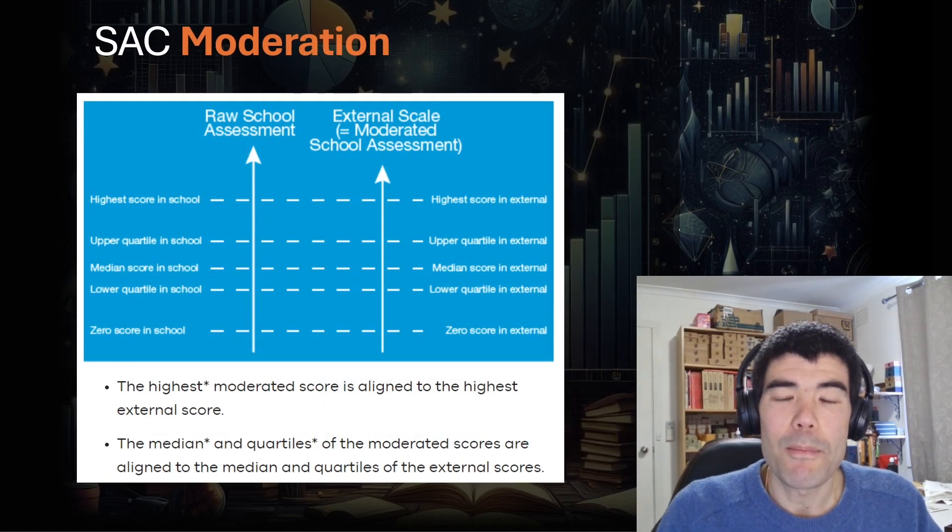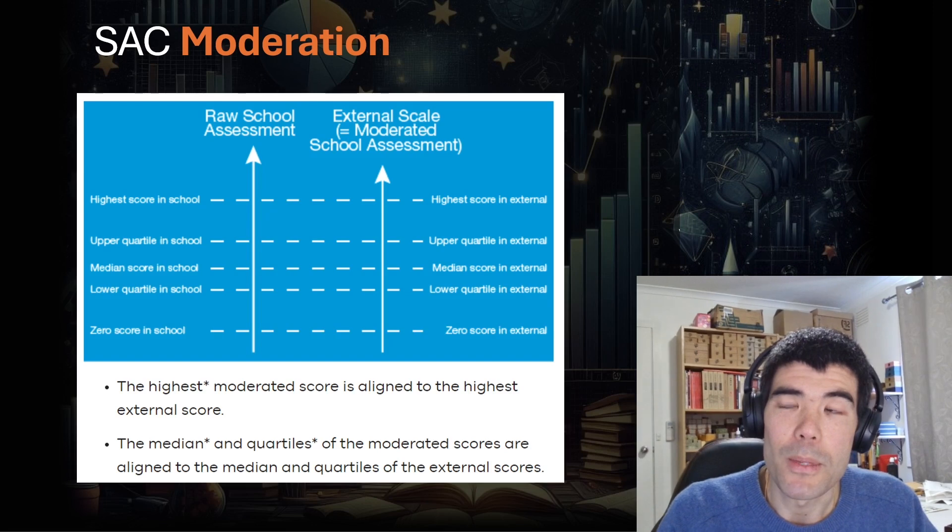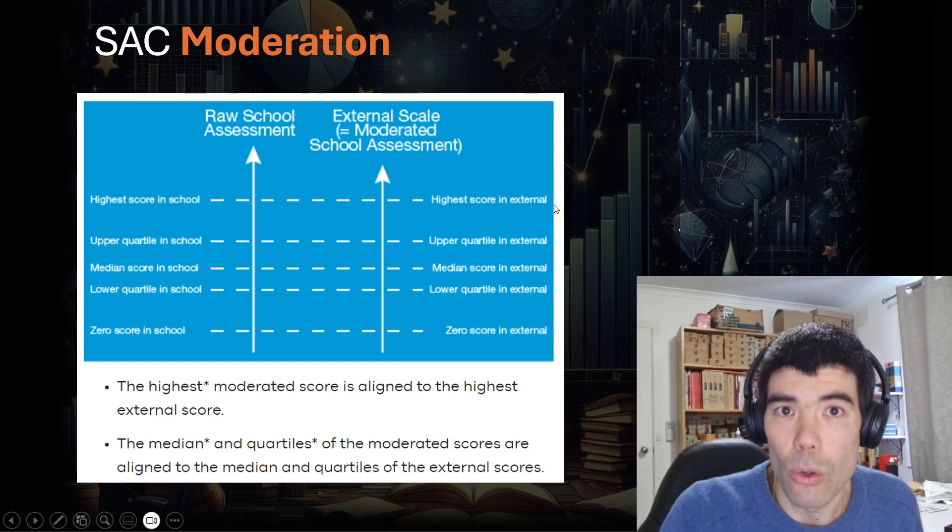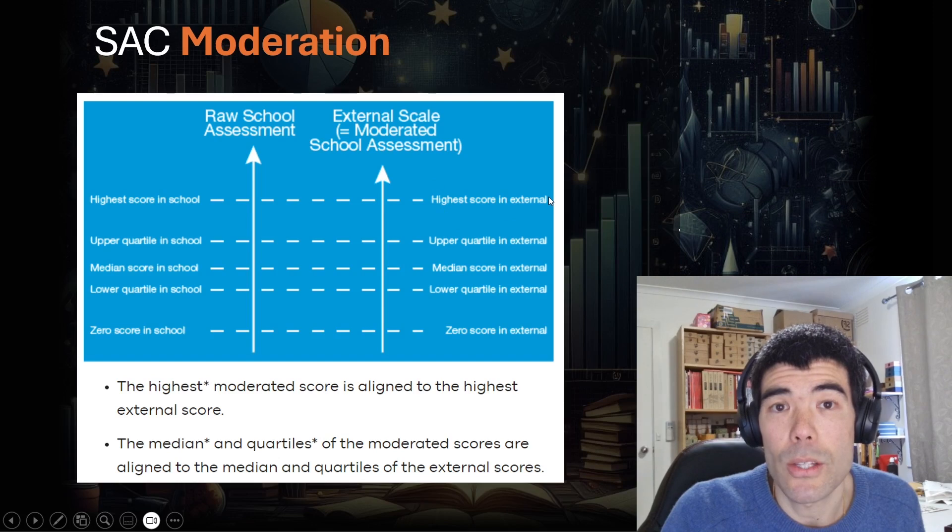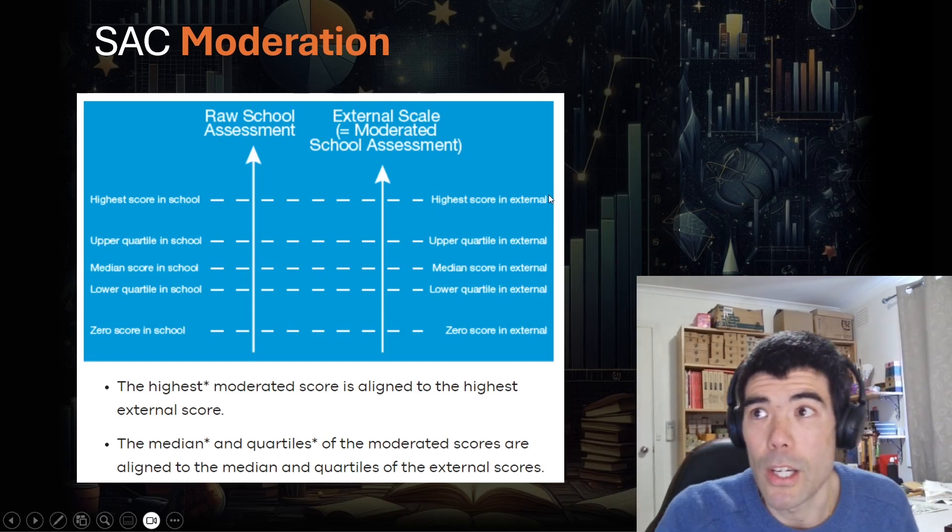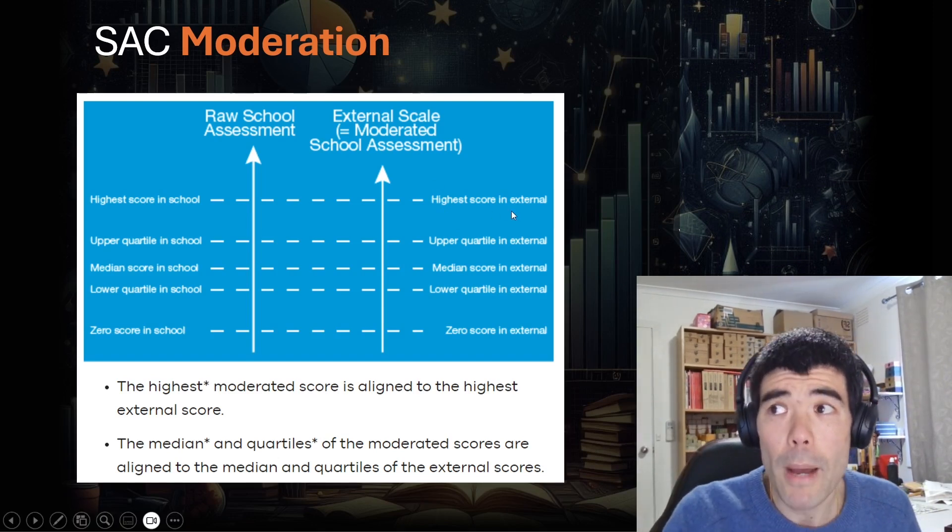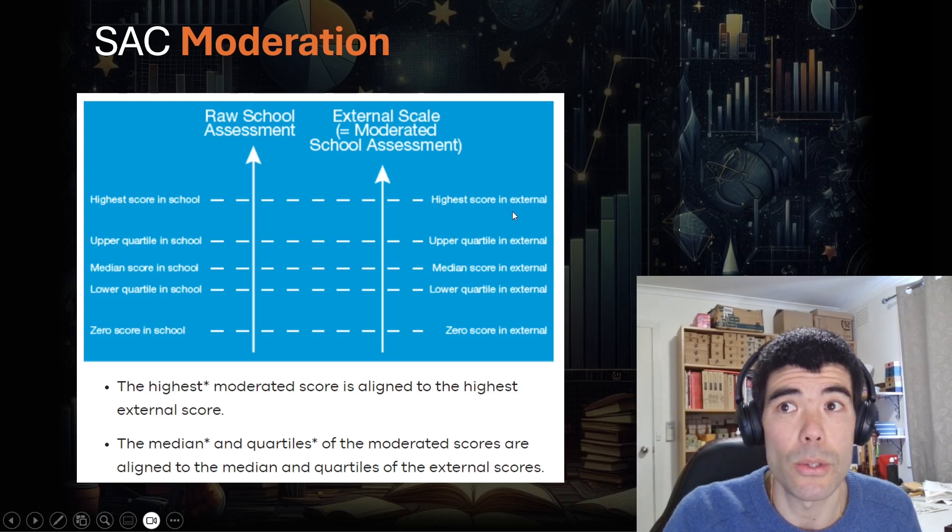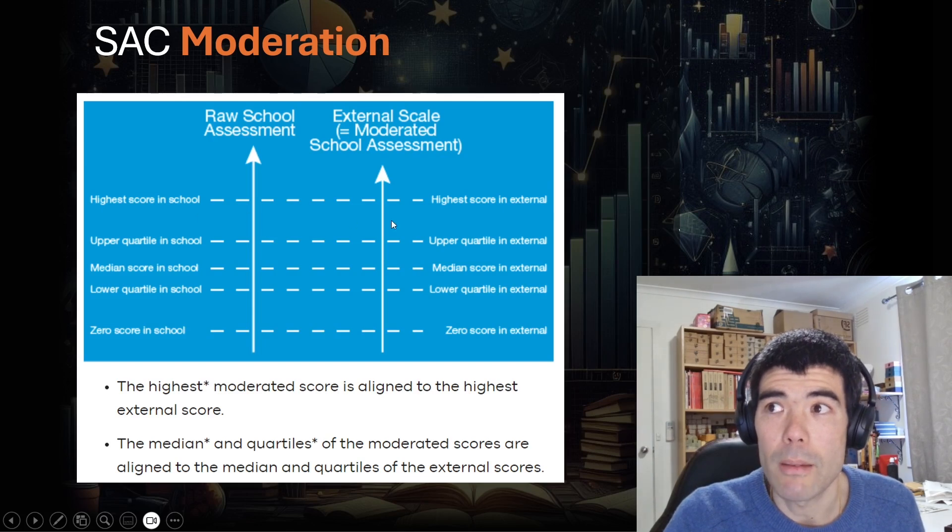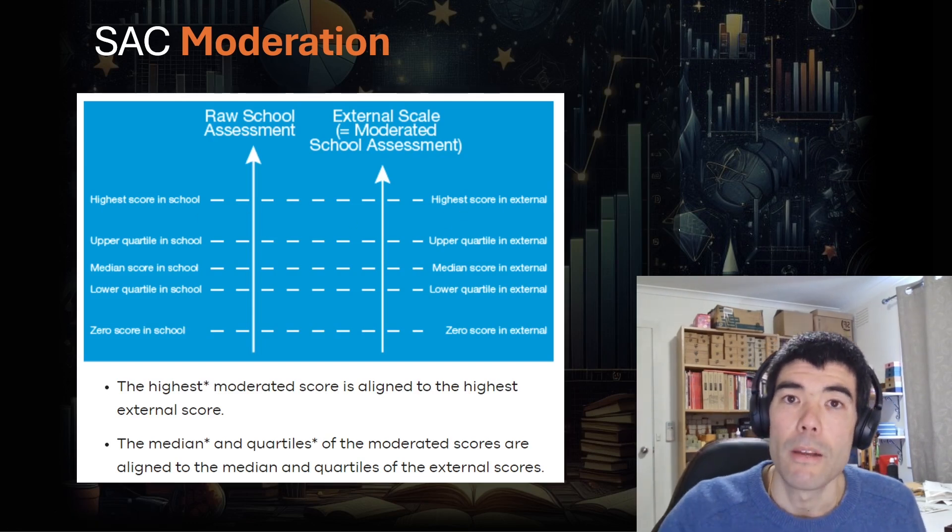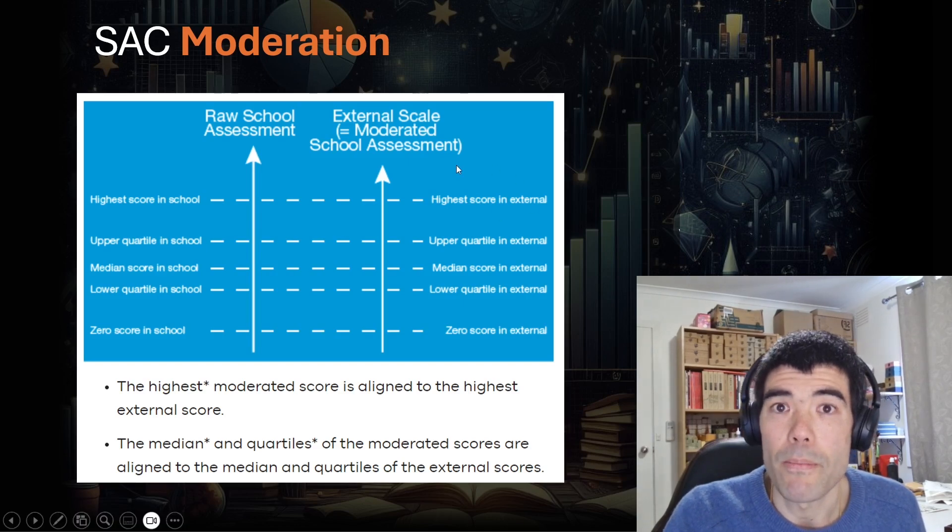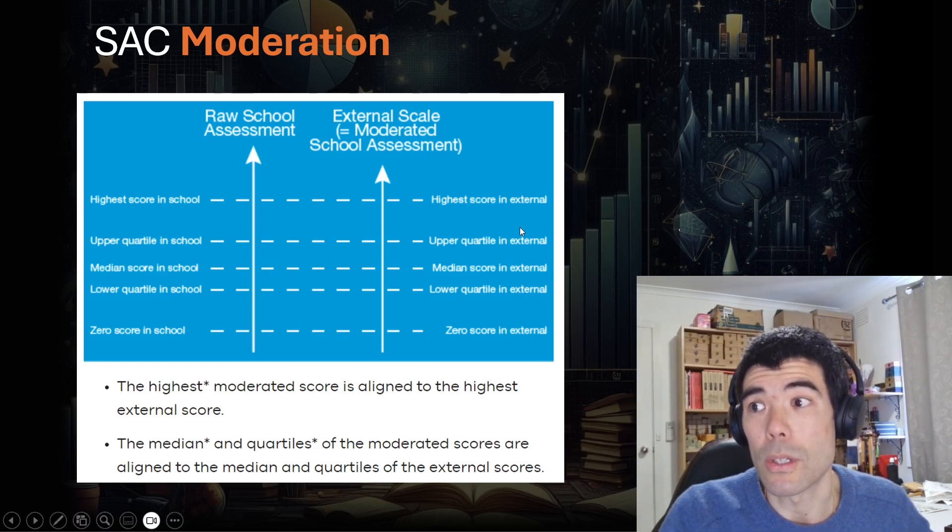Now that question about what happens if the top rank student bombs the exam? Isn't that going to affect all the SAC scores in our school because that highest external score is important for SAC moderation? And yes, while that is true, what matters is what that highest external score is, not who got it. So it doesn't matter if the person who got the top SAC rank gets a bad exam score. Well, it does for that person, but for the school overall, what matters is the actual highest score, which could be a different student.